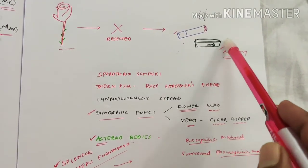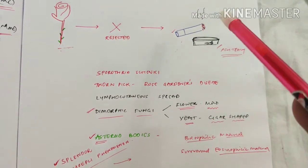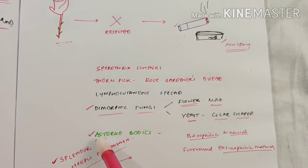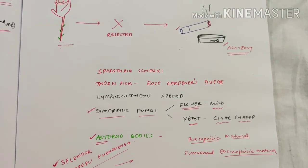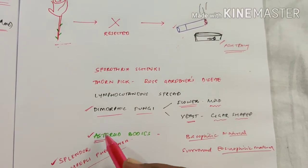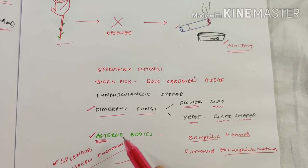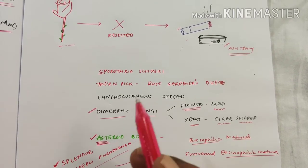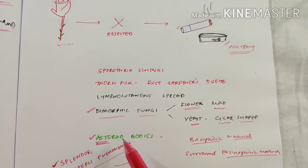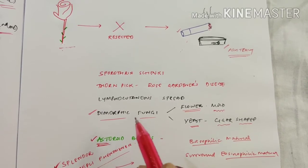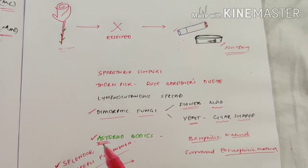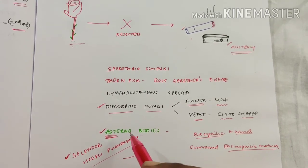You are using your ashtray, very common, right? By ashtray you can remember that it has asteroid bodies—it shows asteroid bodies. A very commonly asked question: where you can see asteroid bodies? By ashtray, this simple story helps you remember asteroid bodies are seen in sporotrichosis.